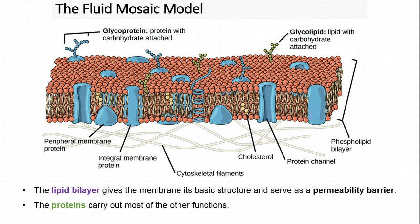Here is an overview of a cell membrane. This is a model of the membrane called the fluid mosaic model. A mosaic is a larger part made up of individual pieces, and this is called a fluid mosaic model because these individual pieces are not tied to one place — they can move around inside the membrane. This lipid bilayer, with our hydrophilic heads and hydrophobic tails, gives the membrane its basic structure and serves as a permeability layer.